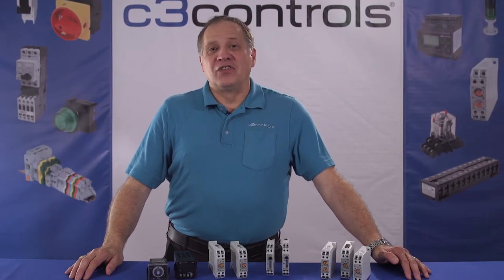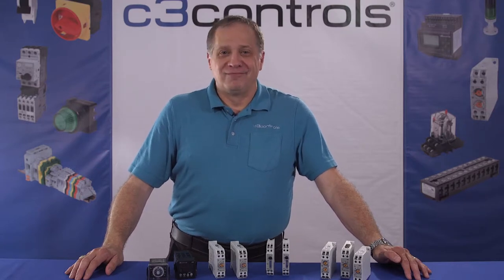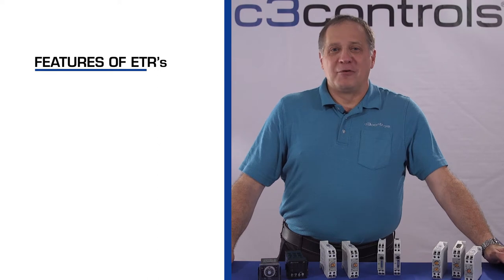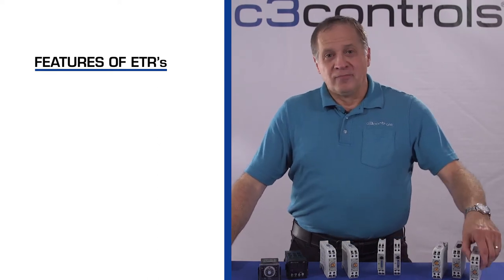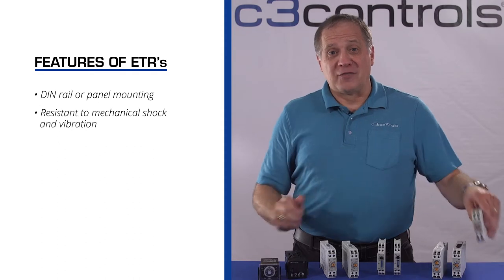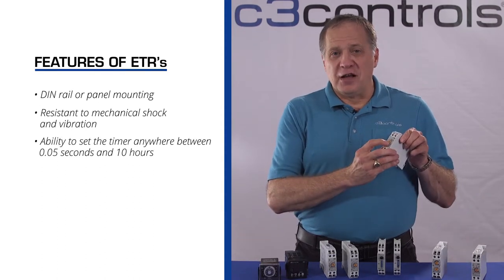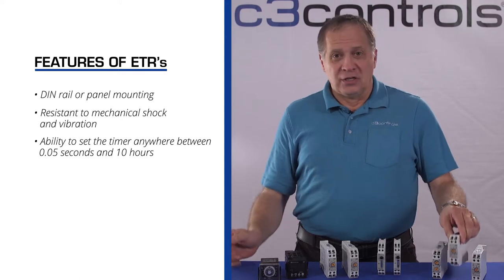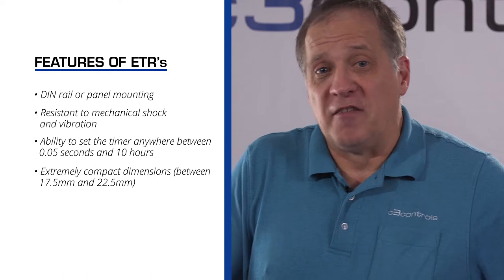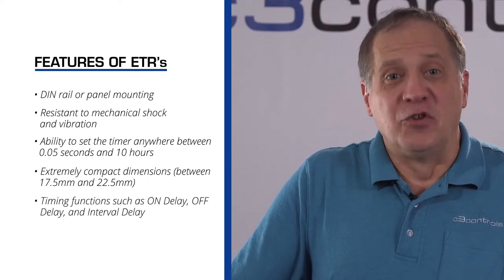ETRs provide a wide range of selectable functions so that users can customize their specific machine operation. Features to look for in electronic timing relays include DIN rail or panel mounting, resistance to mechanical shock and vibration, the ability to set the timer anywhere between 0.05 seconds and 10 hours, extremely compact dimensions between 17.5 and 22.5 millimeters, and timing functions such as on delay, off delay, and interval delay.